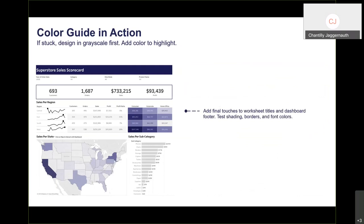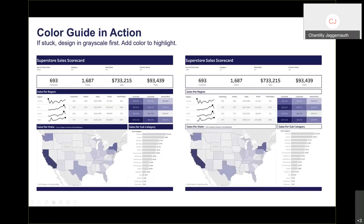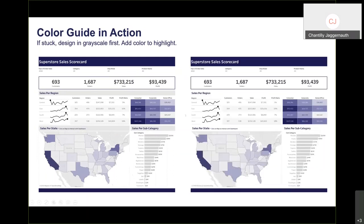Finally, add touches to worksheet titles and the dashboard footer. Test shadings, borders, and font colors, but be strategic. Heavy shading on every section title is very distracting and overpowering — it takes away from the visualization. Too many borders next to each other looks cluttered. Use a neutral color for headers, or simply increase the font size and change the color. Stay away from thick, dark background colors and thick borders.